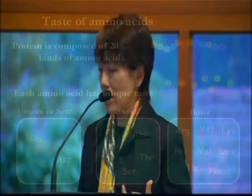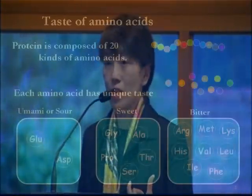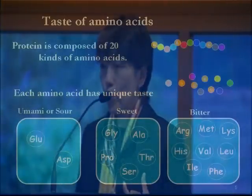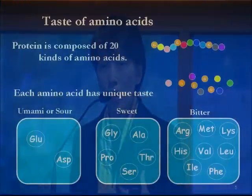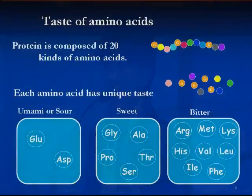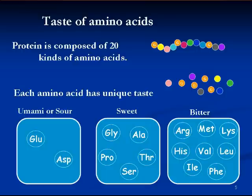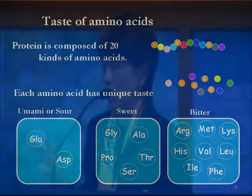Let me talk about protein and amino acids. Basically, protein is composed of 20 different kinds of amino acids, and pure protein has no taste. But once protein is broken down into individual amino acids, each amino acid has a unique taste. These 20 amino acids are divided into three different taste groups: umami or sour, sweet, and bitter.